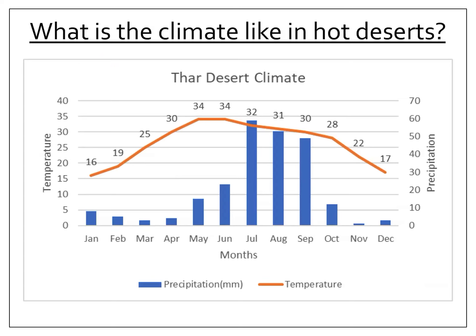We need to be careful when reading climate graphs that we look at the correct axis. If I wanted to give the amount of rainfall for August, I would look at the blue bar for August, then look at the right-hand axis where it says precipitation — I can see that in August the rainfall is 50 millimetres. For another example, if we look at January and read across to the right-hand axis, we can see that the precipitation in January is much lower, at 8 millimetres.